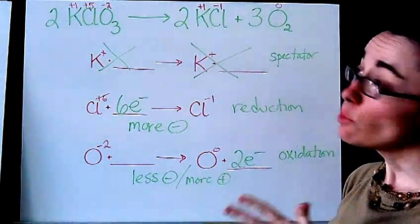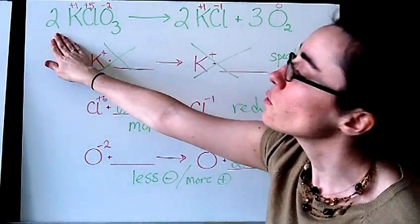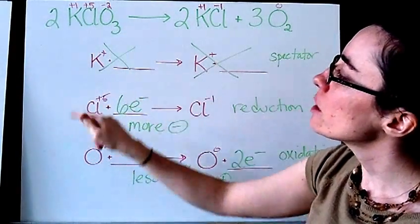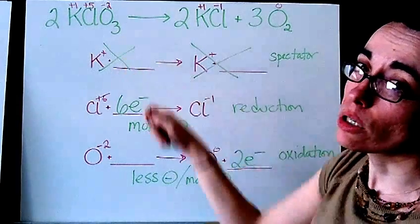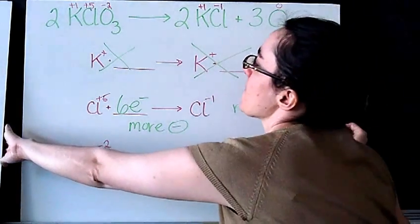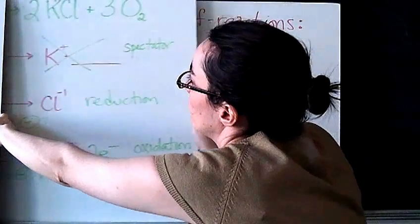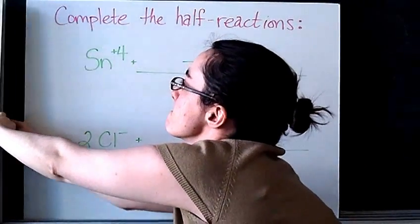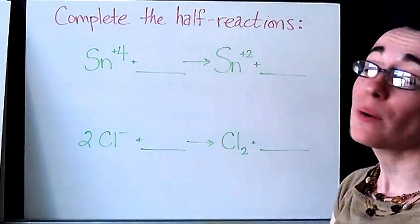So just to debrief how we did this one. First things first, we ignored the coefficient. And then once we had assigned oxidation numbers, we actually left out the subscripts as well.